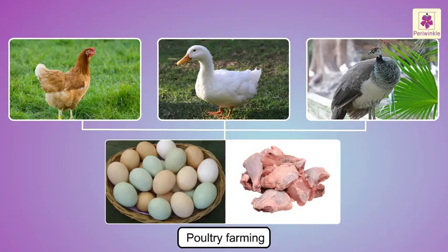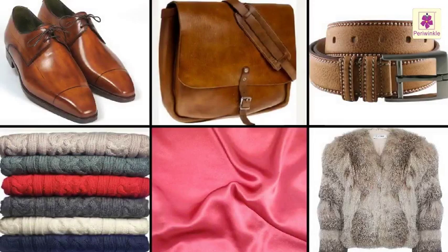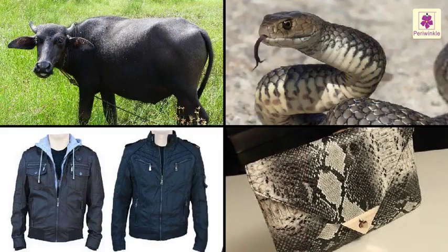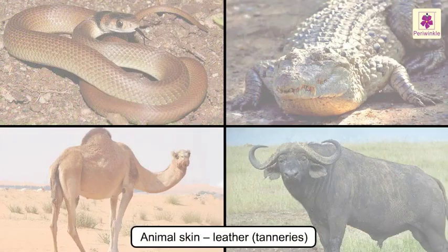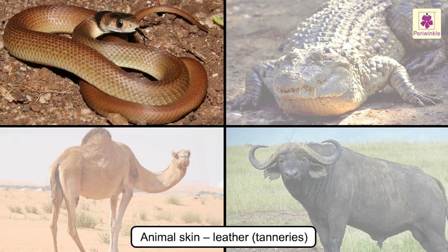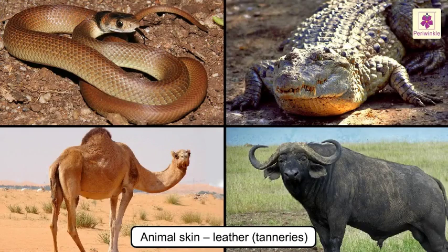Other than food, animals also form a direct or an indirect source of the various household products we use. We use the skin of some animals to make a very commonly used material called leather. When snakes, crocodiles, camels, and buffaloes die, their skin is made into leather in tanneries.